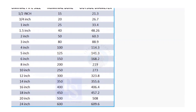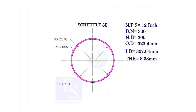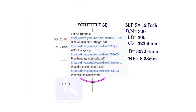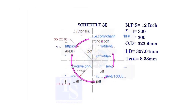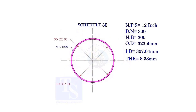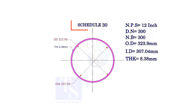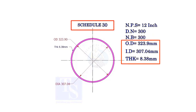Please check the links given in the description for PDF documents. Let us study the terms of a 12 inch pipe. The DN and NB sizes are the same. This is a schedule 30 pipe. Read the OD, ID, and thickness.